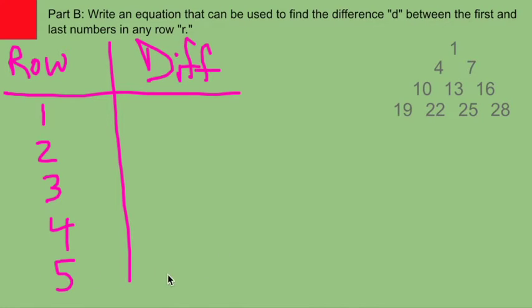Check it. We already looked at the difference for row 5, which was 12. So I'm going to write that down. And for row 1, 1 minus 1 is 0. For row 2, 7 minus 4 is 3. 16 minus 10 is 6. 28 minus 19 is 9. What's going on here?